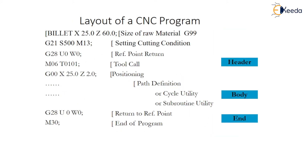First, understand the layout of CNC programming. Within that, it starts with the first dilate part — that means the raw material part. So it is having X250, Z16. X will be the dimension above diameter and Z will be the dimension around the range of a particular block.